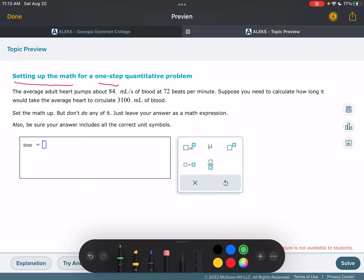Alright, so let's go through and interpret the question first of all. The average adult heart pumps about 84 milliliters per second. So how are we going to interpret that? Let's make a conversion factor for that. 84 milliliters equals one second.